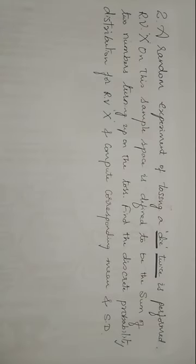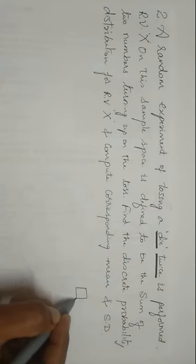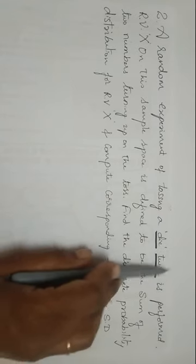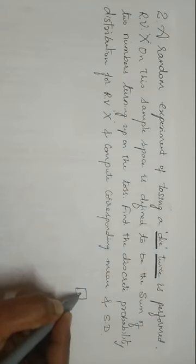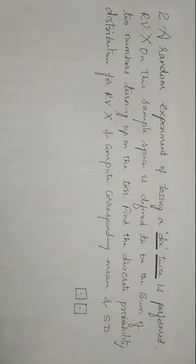To solve this problem, let us understand the question first. The random experiment is being done with a die, which has six faces. They are doing the random experiment twice — a die thrown twice and two dice thrown simultaneously are both the same.